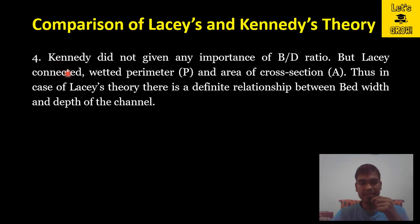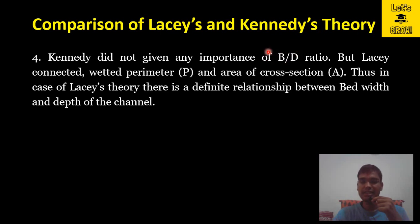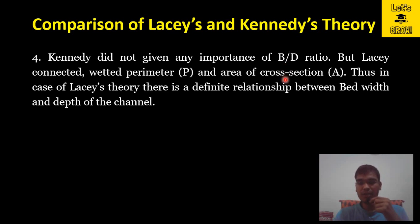Point four: Kennedy did not give any importance to the b/d ratio, but Lacey connected the wetted perimeter P and area of cross-section A. Thus in Lacey's theory there is a definite relationship between bed width and depth. In Kennedy's theory there is no b/d term, but in Lacey's theory we use wetted perimeter P = 4.75√q and cross-sectional area A = q/v, so the b/d ratio is fixed in the background.